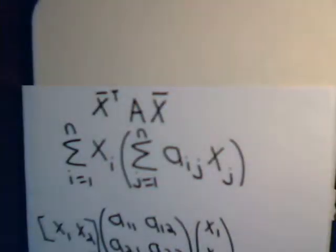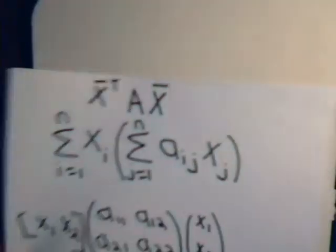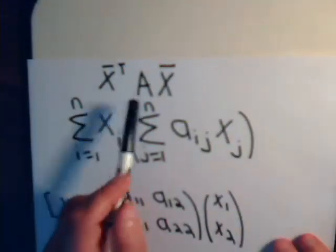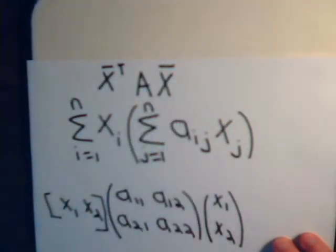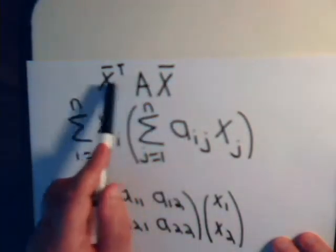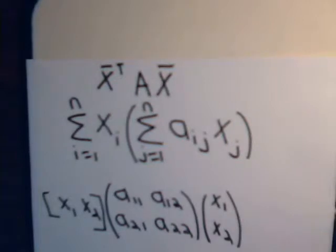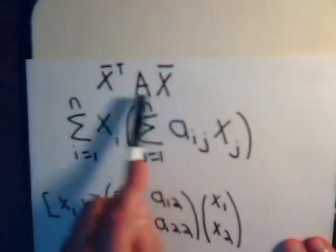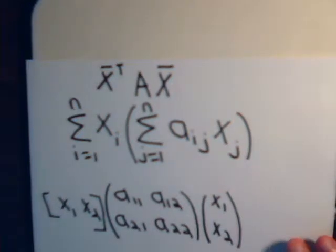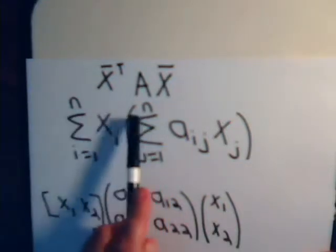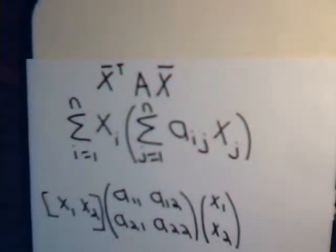Now, this is where we left off in the previous video. We said that some matrix, actually a symmetric matrix, multiplied by a vector on its right and a column vector and a row vector on its left is the definition for a quadratic expression. Then we wrote this in component form. In the last video, we sum this to where n equals 2.